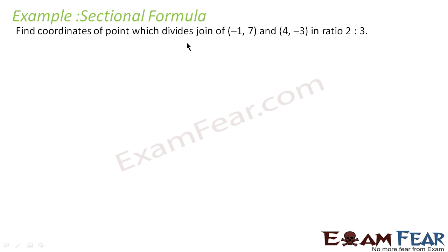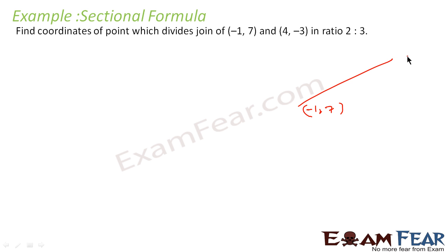Find the coordinates of the point which divides the join of (-1, 7) and (4, -3) in 2 to 3 ratio. So let's draw this line here. This is (-1, 7) and this is (4, -3). Let's call them A and B, and let C be the point dividing in ratio 2 is to 3. We can directly use the formula or the logic.